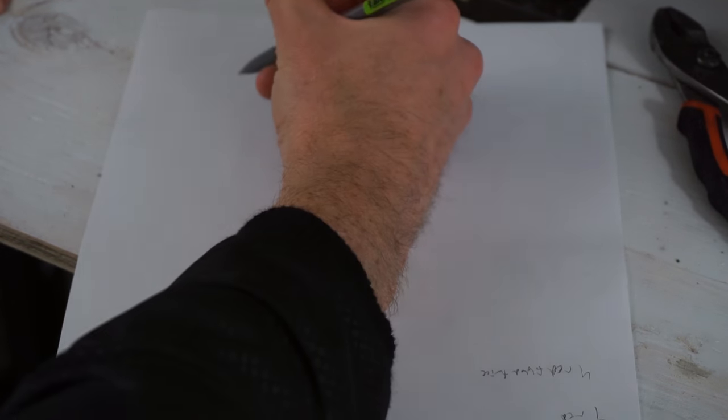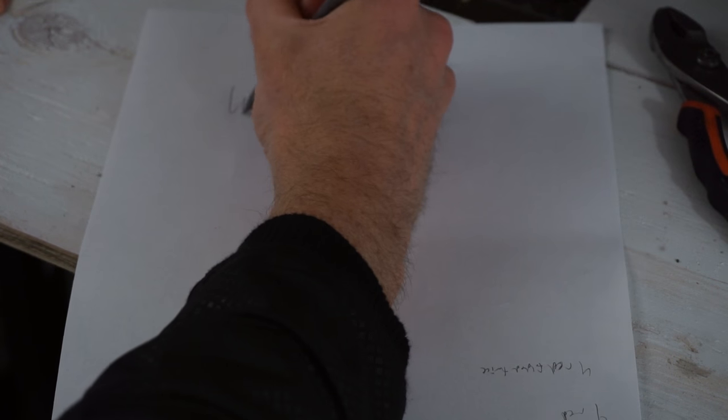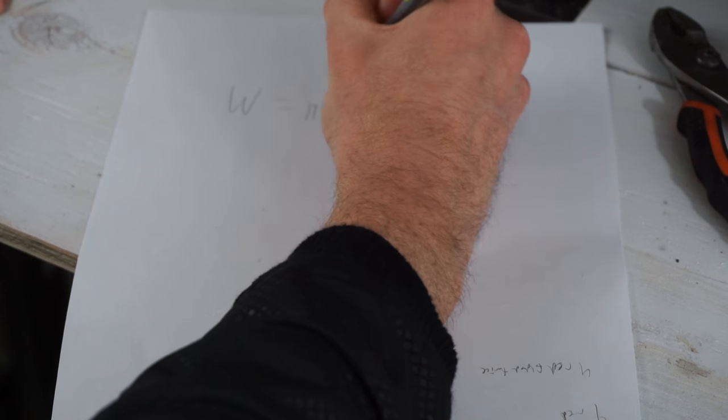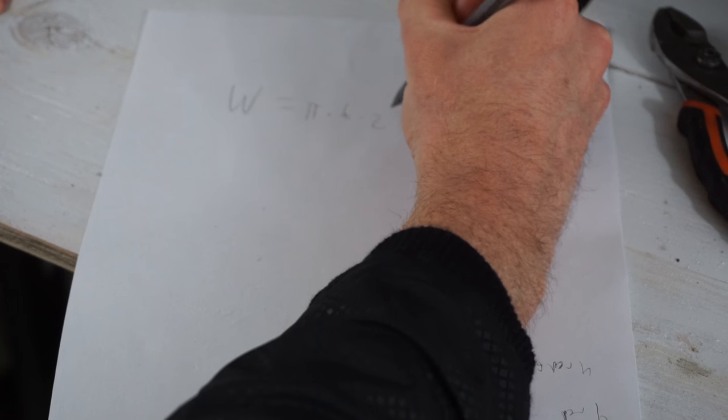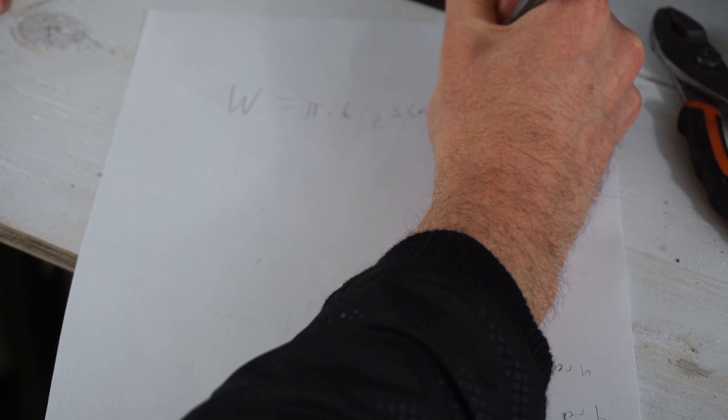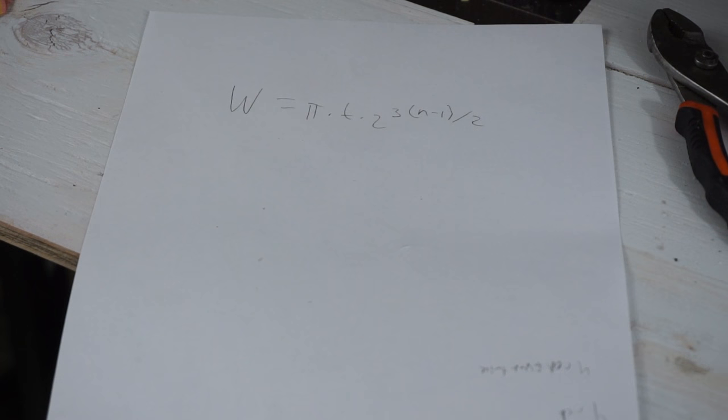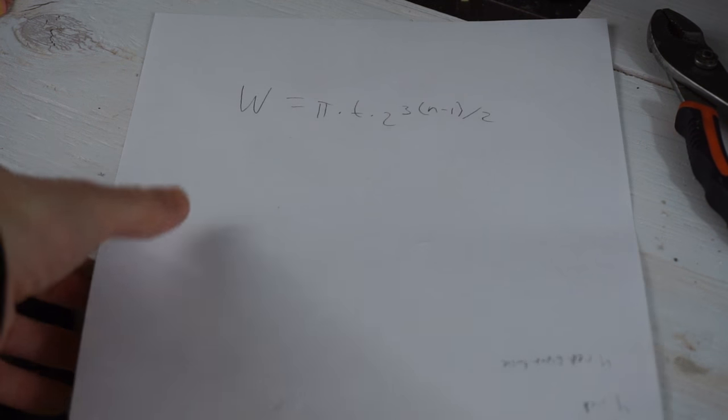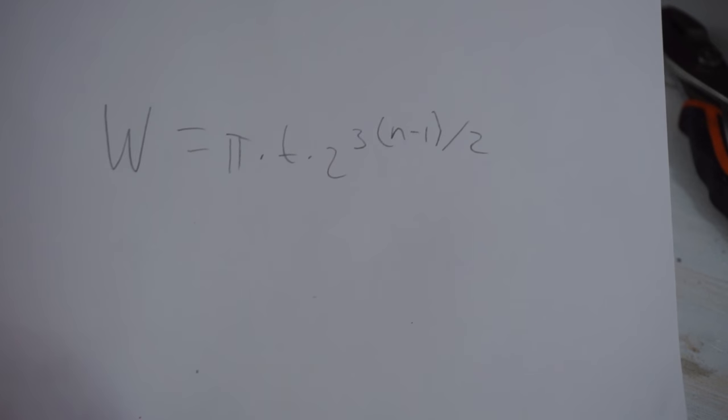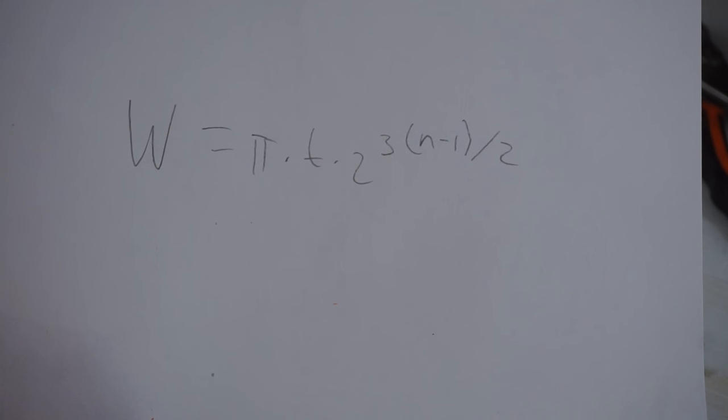Here's a cool equation for you: this is the width needed to fold a piece of paper n times. Width equals π times t times 2 to the power of three times n minus one, over two. Using this, you can calculate how big a piece of paper you would need to fold it n times.